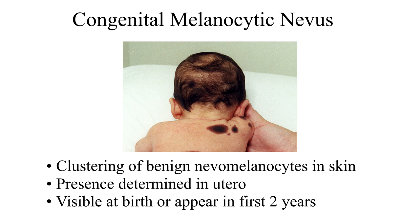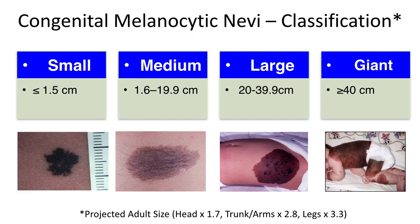This is Dr. Michael Marchetti. Let's talk about small congenital nevi. The congenital melanocytic nevus is considered a clustering of benign nevomelanocytes in the skin whose presence is determined in utero, and is visible at birth or appears within the first two to three years of life.